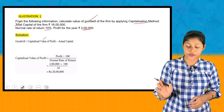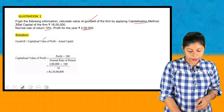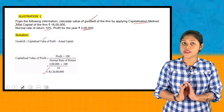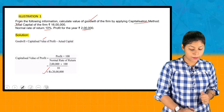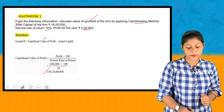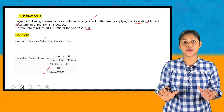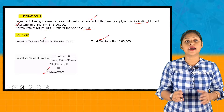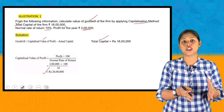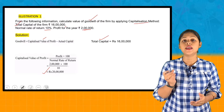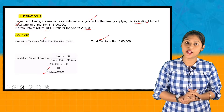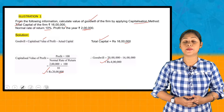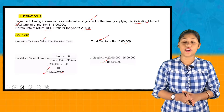The capitalized value of profit is 20 lakh. The actual capital employed is 16 lakh. Therefore, goodwill equals capitalized value of average profits minus actual capital employed, which is 20 lakh minus 16 lakh, giving goodwill of 4 lakh as per the Capitalization Method.